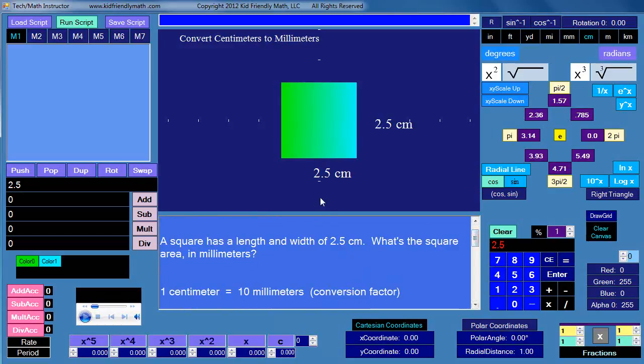Here's a conversion factor. First we need to go from centimeters to millimeters. One centimeter is equal to 10 millimeters. It's just that simple. They're usually powers of ten, hundred, thousand, or tenths, hundredths, or thousandths to get from one unit to the next.